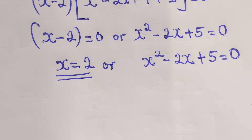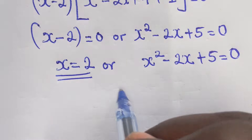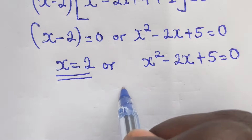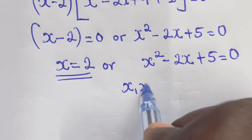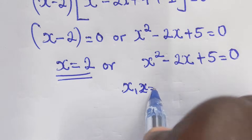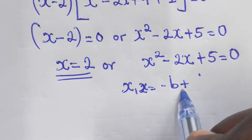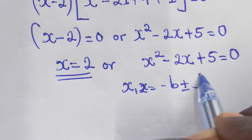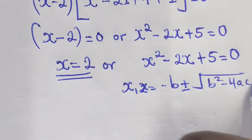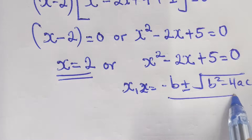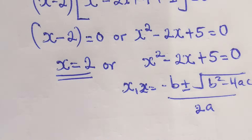You have to use the formula method. x1 and x2 equal negative b plus or minus the square root of b² - 4ac, over 2a.